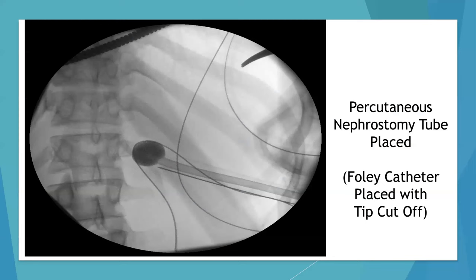After complete ablation, a percutaneous nephrostomy tube is placed. Here we see our standard Foley catheter with the tip cut off used for nephrostomy tube placement. This can assist in hemostasis post-procedure as it provides a tamponading effect. Additionally, a ureteral stent may be placed antegrade or retrograde.